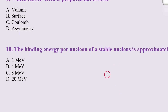Question 9: Which semi-empirical mass formula term is proportional to A^(2/3)? Question 10: The binding energy per nucleon of a stable nucleus is approximately — ? Write the correct option in the comment section. For detailed answers with explanations, join the answer key batch. Contact through WhatsApp or comment below for any doubts. Thank you.